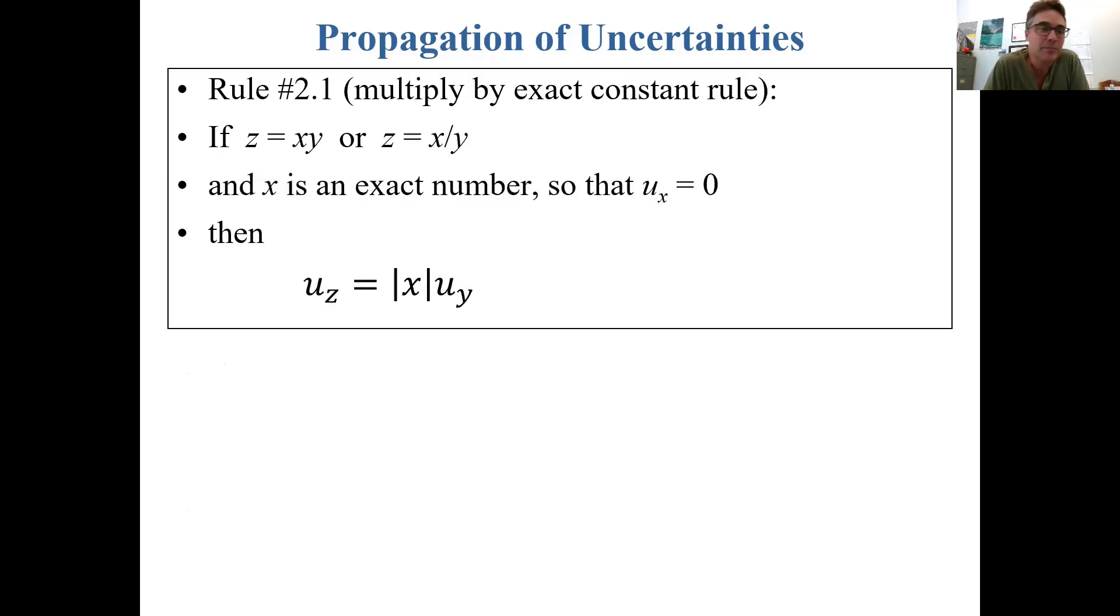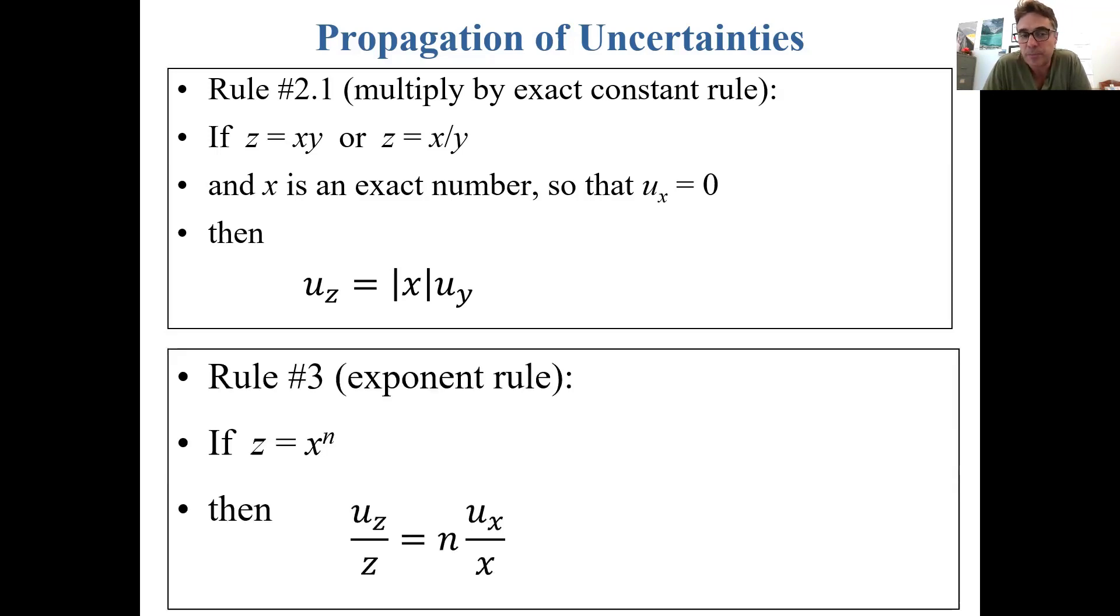Rule two point one, which can be derived from rule two, is that if you're multiplying by an exact constant, so z is x times y or x divided by y, and x is an exact number so U sub x equals zero, then the uncertainty in this product is equal to the absolute value of x times the uncertainty in y. This is a useful rule for unit conversions, for example, where you know exactly how to convert from one unit to another, so there's no uncertainty in that ratio.